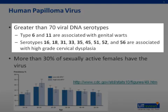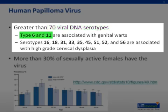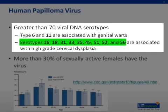Human papillomavirus is a very prevalent virus that has greater than 70 viral DNA serotypes. Type 6 and 11 are associated with genital warts, which are considered the low-risk type of HPV. The serotypes 16, 18, and 31, along with the others listed here, are associated with high-grade cervical dysplasia and are considered high-risk.